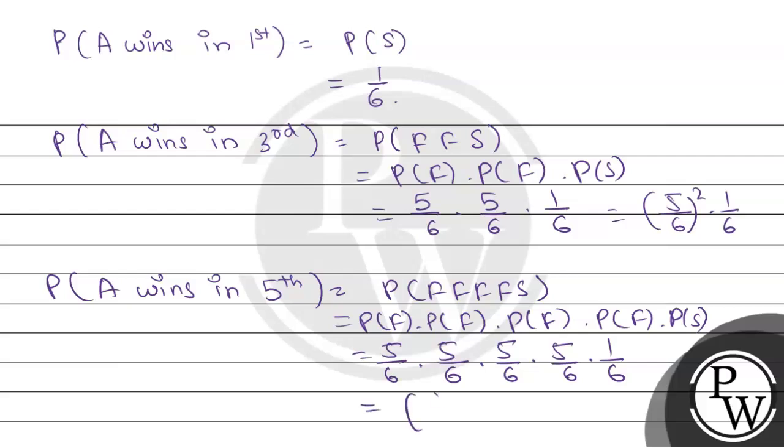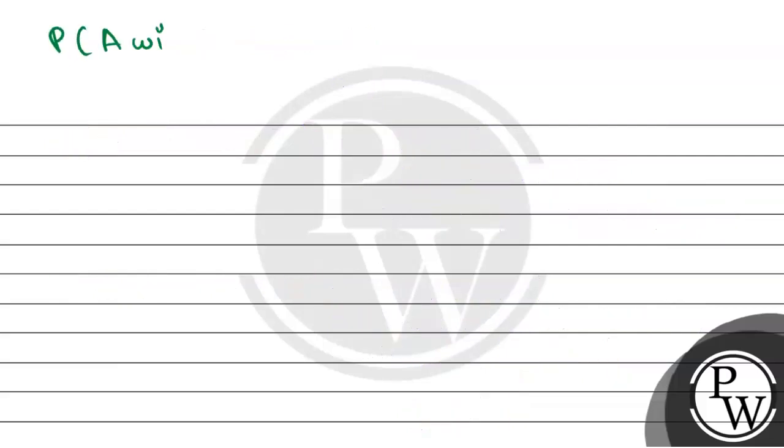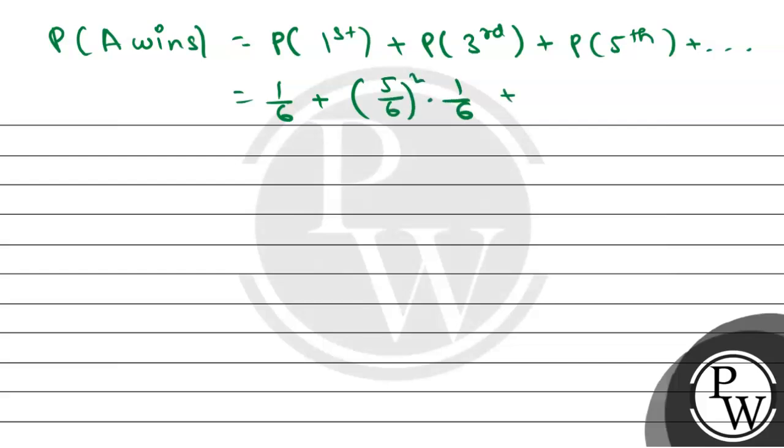The probability of A wins equals probability of A wins in first round plus third round plus fifth round and so on. Its value is 1/6 plus (5/6)² × 1/6 plus (5/6)⁴ × 1/6 and so on. Taking 1/6 common, we get 1 plus (5/6)² plus (5/6)⁴ plus like this. This is an infinite GP series.